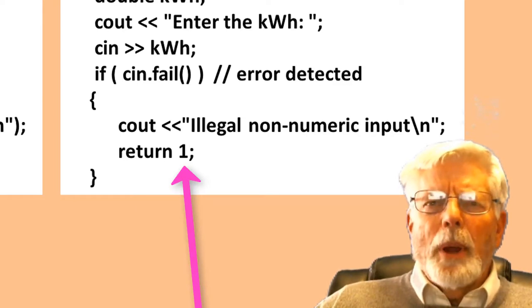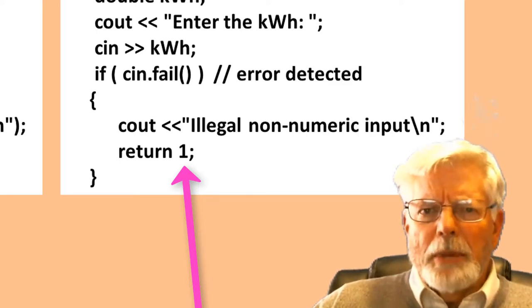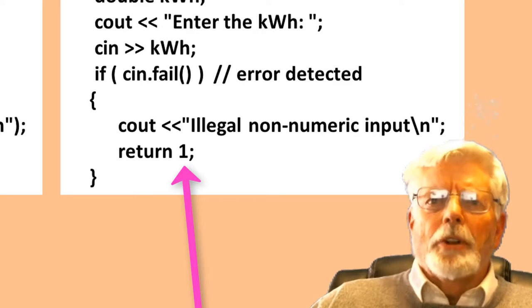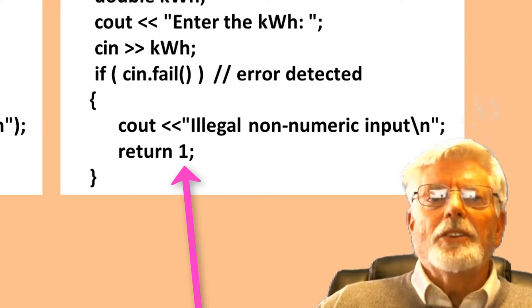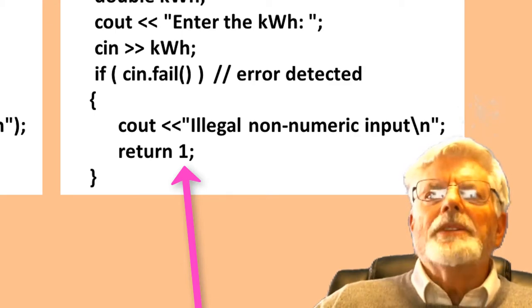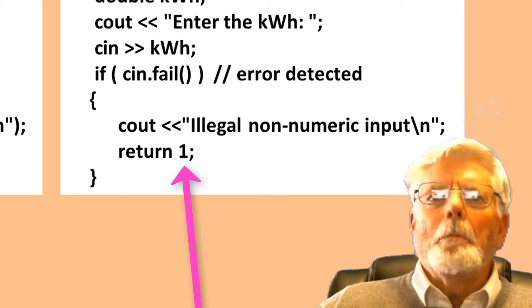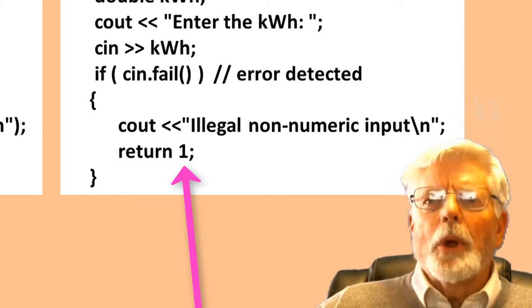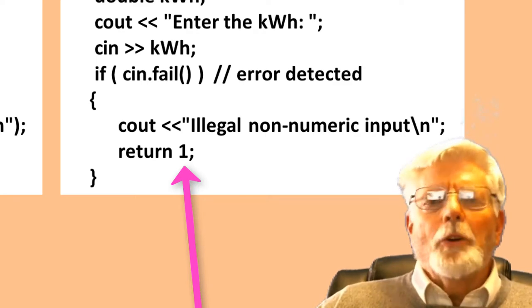Since we started the program with int main, we should have an integer such as 0, 1, or 2 as part of the return statement. If we started with void main, then an integer would not be permitted in the return statement. At this point in our programming career, we are not making our program part of a batch or script file, so the value in the return statement does not really matter.